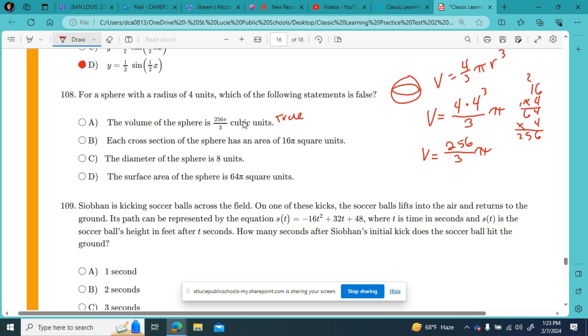Part B says each cross section of the sphere has an area of 16 pi square units. Well, I think the middle cross section probably does. The area of a circle is pi r squared, pi times four squared is 16 pi. But not each cross section, only the biggest one that includes the entire radius. So this is false. Which statement is false? This one.